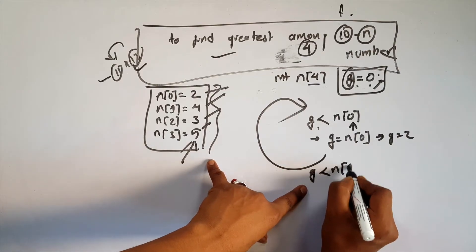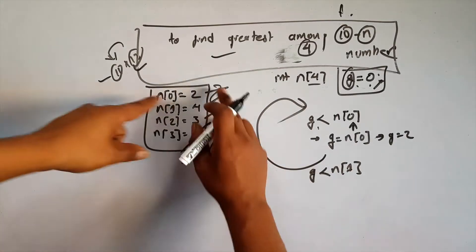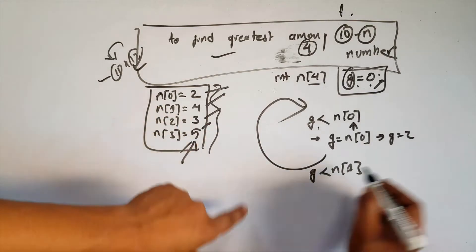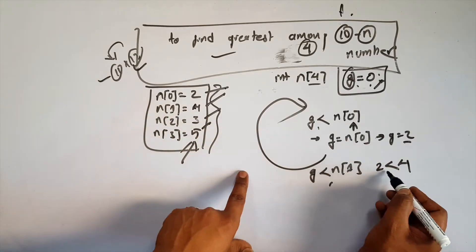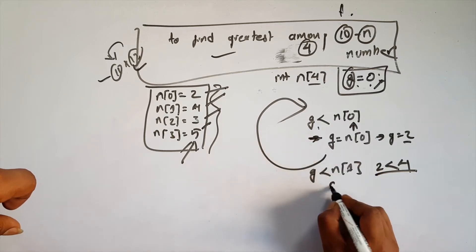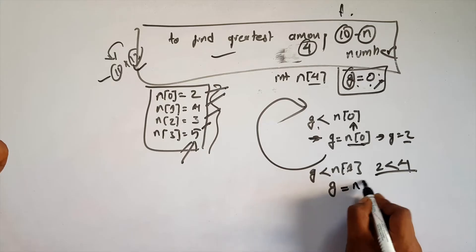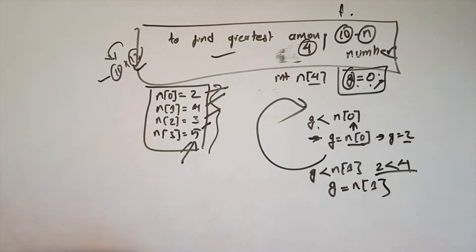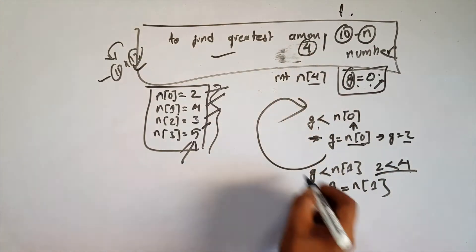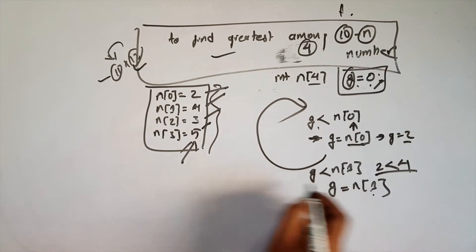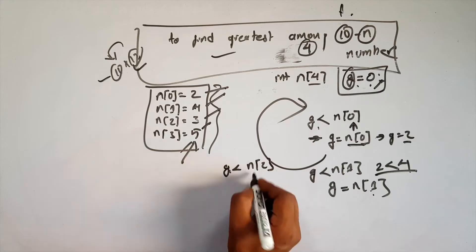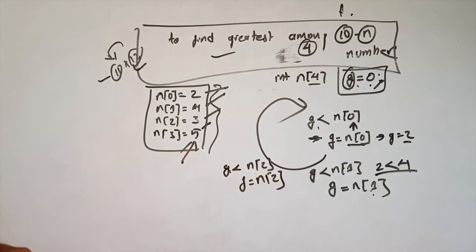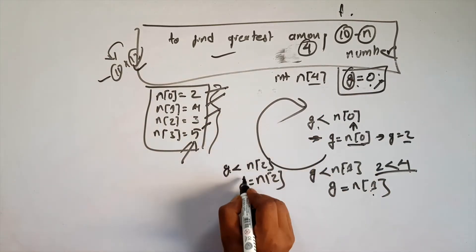G is less than n1 — the numbers compare the same. If 2 is less than 4, then that is true. G is replaced by n1. Then G is less than n2 — G will replace n2. What is the rule? 2 is less than n2, G will be 4.